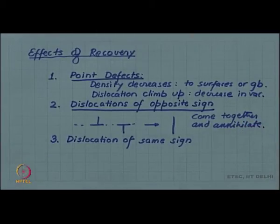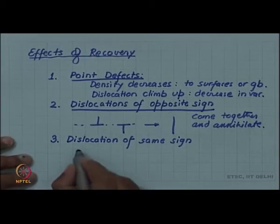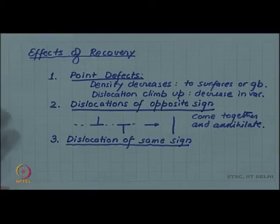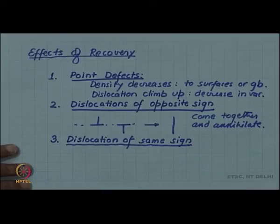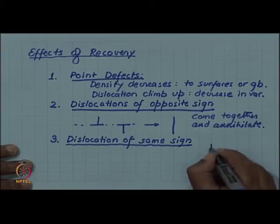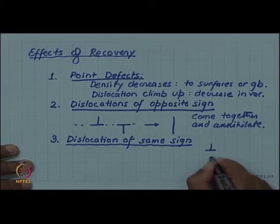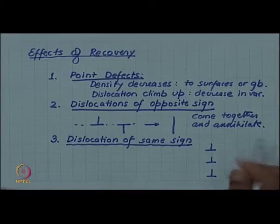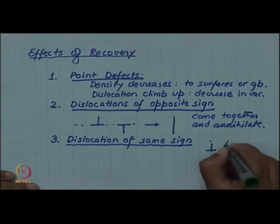This has been shown for edge dislocations; the same is true for right-handed and left-handed screw dislocations. If there is an excess of dislocations of the same sign, this annihilation may not cancel all of them. Excess dislocations of the same sign will be left, and these dislocations try to align themselves one above the other to reduce their strain energy, forming what is called a low angle tilt boundary.